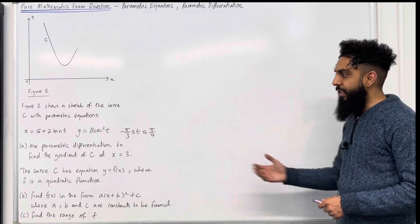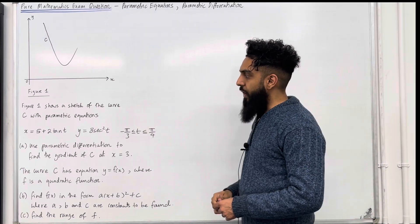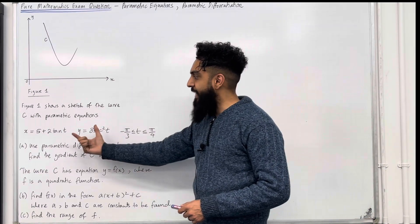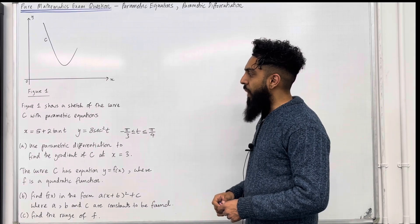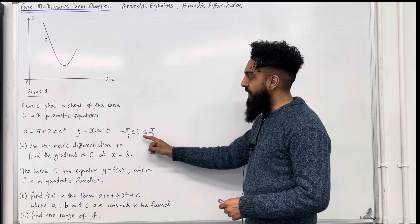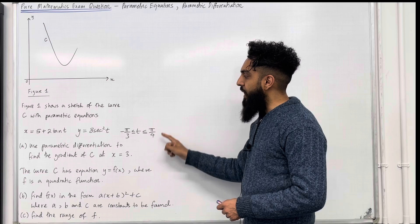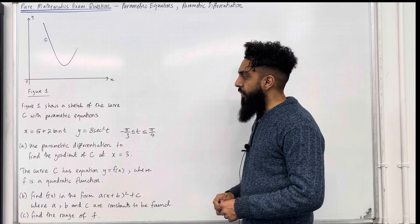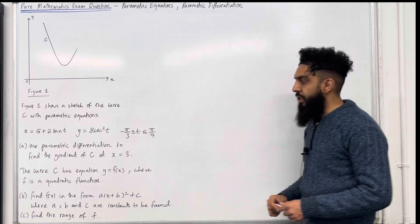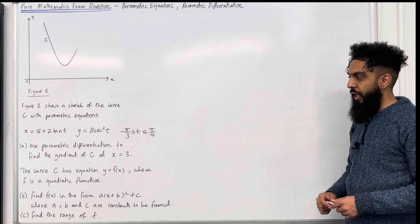Here is the exam question. Figure 1 shows a sketch of the curve C with parametric equations x equals 5 plus 2 tan t, y equals 8 sec squared t, where t is greater than or equal to minus pi over 3, but less than or equal to pi over 4. Part A: use parametric differentiation to find the gradient of C at x equal 3.